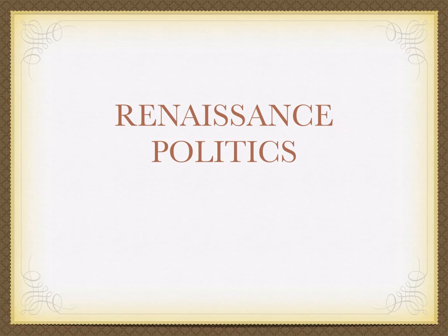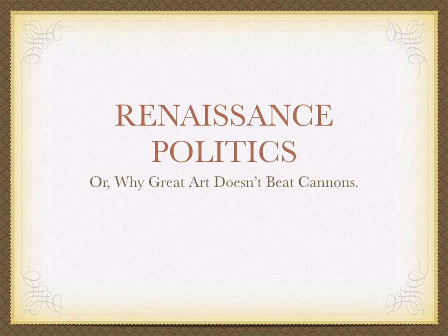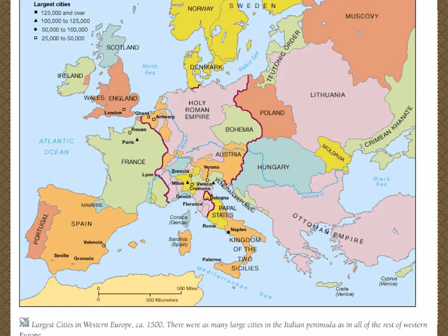This is Renaissance politics, or if you prefer, why great art doesn't beat canons. The purpose of this presentation is to introduce the big players and the big themes in the international political arena during the Renaissance — mostly the end of the Renaissance, the end of the 15th century and beginning of the 16th century, where politics becomes more like what we think of as modern Europe.